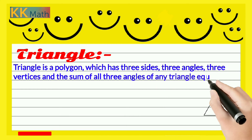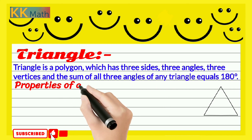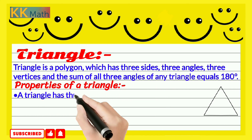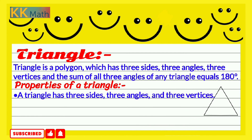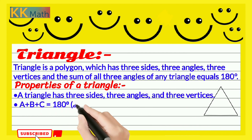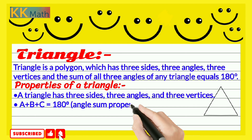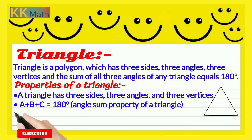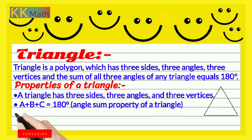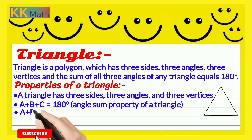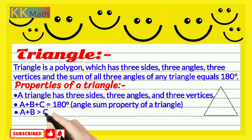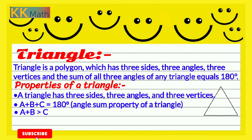The properties of a triangle: a triangle has three sides, three angles, and three vertices. The sum of all internal angles of a triangle is always equal to 180 degrees — this is called the sum property of a triangle. The sum of the length of any two sides of a triangle is greater than the length of the third side.